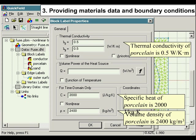Thermal conductivity of porcelain is 0.5 W/K·m. Specific heat of porcelain is 2000 J/kg·K. Volume density of porcelain is 2400 kg/m³.